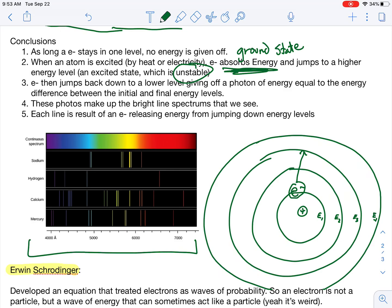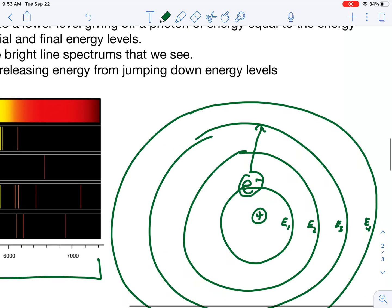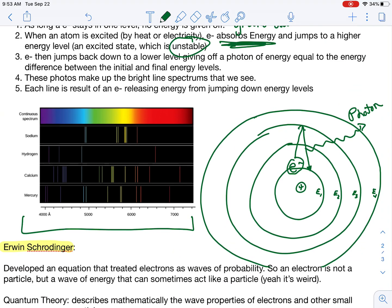The electron will then jump back down to a lower level and give off a photon of energy equal to the energy difference between the initial and final energy levels. So that electron jumped up to E3. It's unstable. It's going to fall back down. And in the process of falling back down, it's going to give off a photon. And that is what these bright line spectrums are all about.